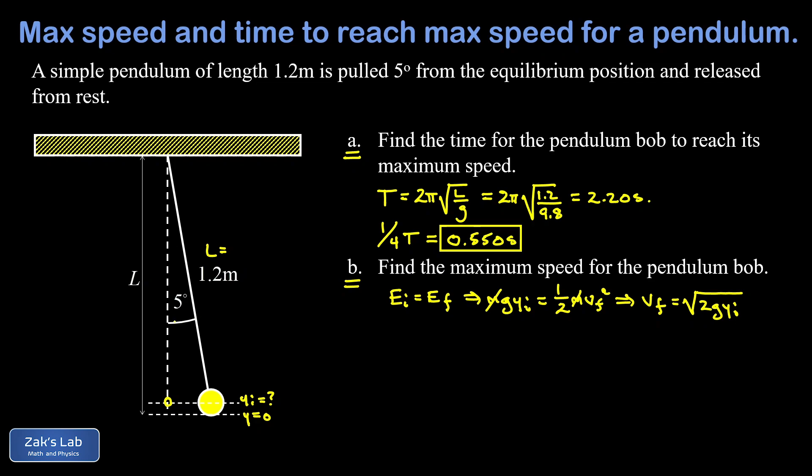And the length we're trying to get here between the attachment point of the string and down here at this little yellow circle is just L times the cosine of five degrees. So that means the little height change that we're looking for here, the difference between y initial and y equals zero, is L minus L cosine five degrees.